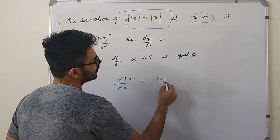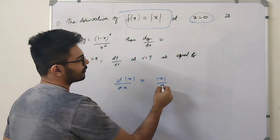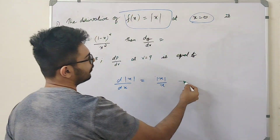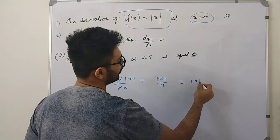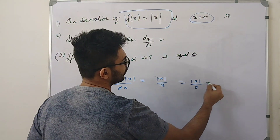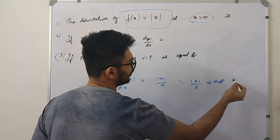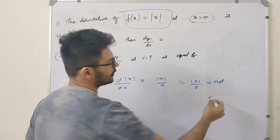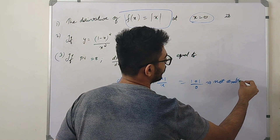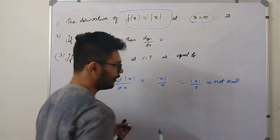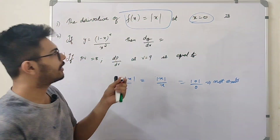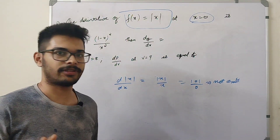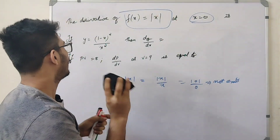Mod x by x and x by mod x. The derivative of mod x is the derivative of x. It's very similar to the time energy. Let's do the other question.